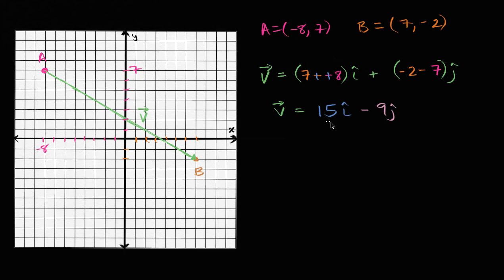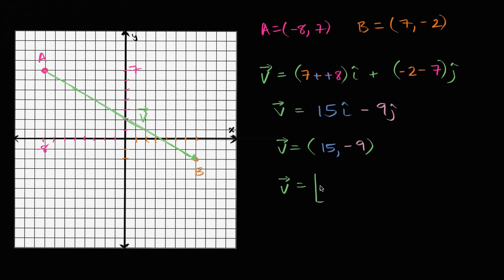And our other way — just to make sure we remember there's a bunch of different notations people use for vectors — you could write it using parentheses: 15 comma negative nine. Or you could write vector V as a column vector: 15 on top, negative nine on the bottom. Depending on what book or notation and what class you're in, you might see all of these things. These are all the same vectors.